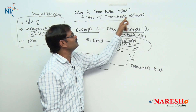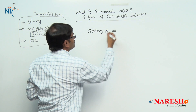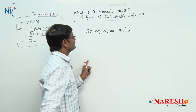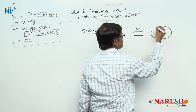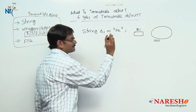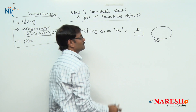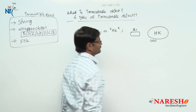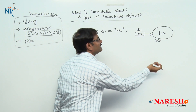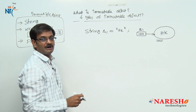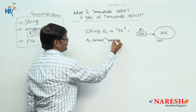Now let us try to understand what are the types of immutable objects. There are 2 types. I want to take String first. String s1 = "hk" — I have taken. When you write String s1 = "hk", what happens? S1 variable is created, string class object is created with reference 1010, and hk is stored. Now what I want to do? I wanted to add "nareshit" to this "hk". In the next line we write s1.concat("nareshit").